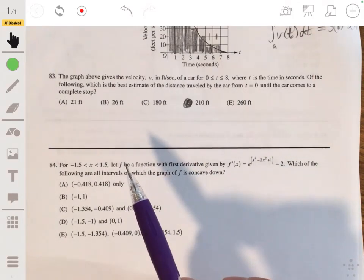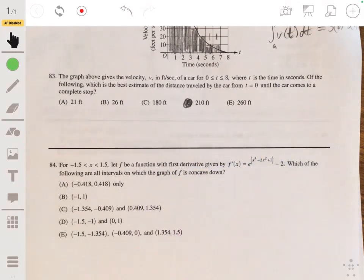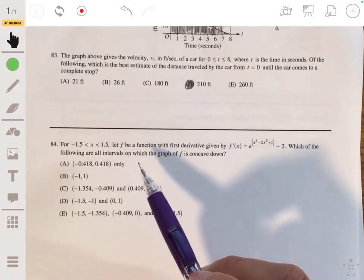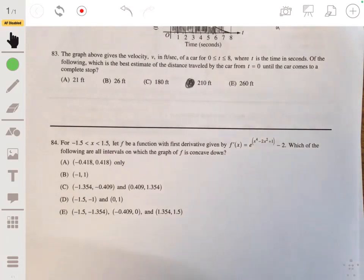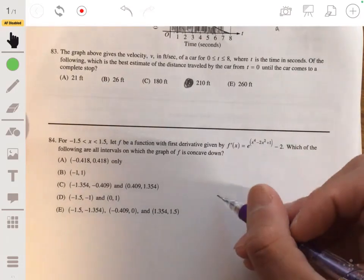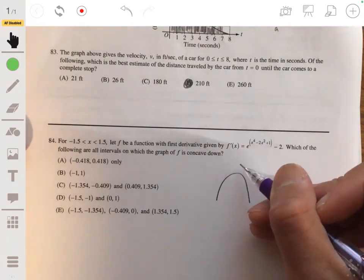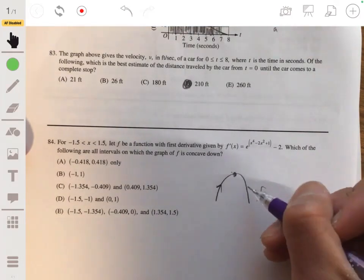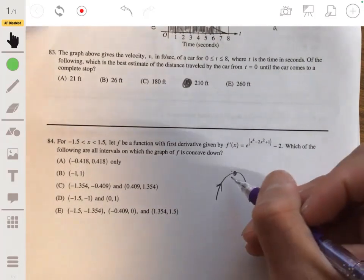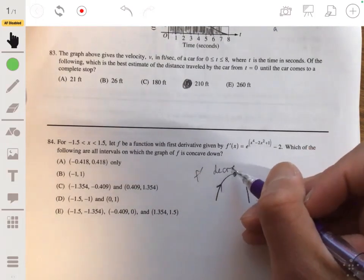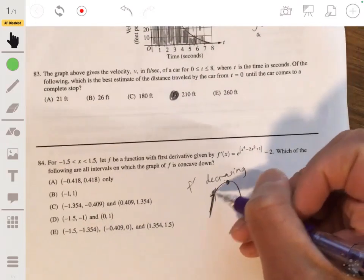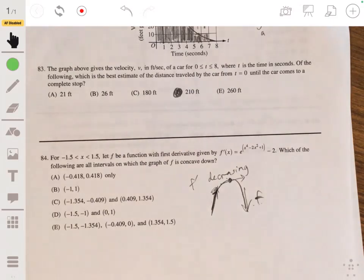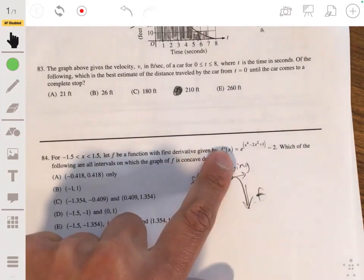84, for x between negative 1.5 and 1.5, let f be a function with first derivative given by f prime of x equals e to the x to the fourth minus 2x squared plus 1 minus 2. Which of the following are all intervals on which the graph of f is concave down? Okay, so remember if we have a graph that when the graph of f is concave down, what this is saying about the first derivative is that it's not necessarily going to go from positive to negative, but basically it's decreasing, f prime is decreasing. It could go from positive to negative, but it's just decreasing, because here let's say the slope would be strictly a positive number, here it becomes zero, and here it becomes negative. So f prime will be decreasing on an interval where a graph is concave down. So let's see on what interval is this graph decreasing.